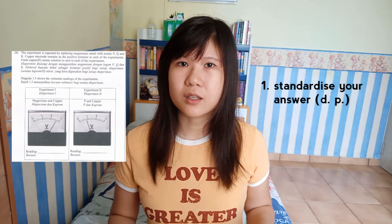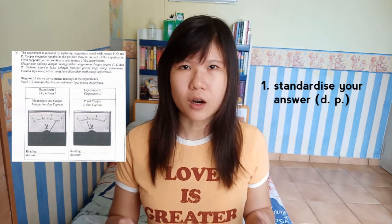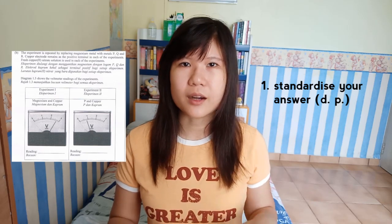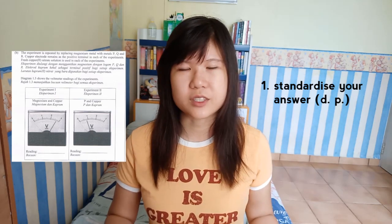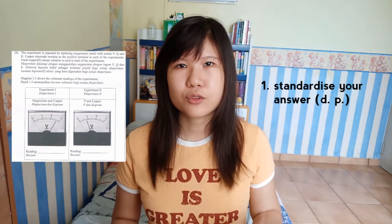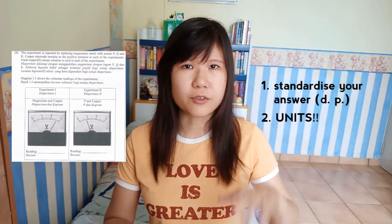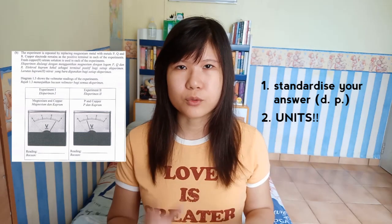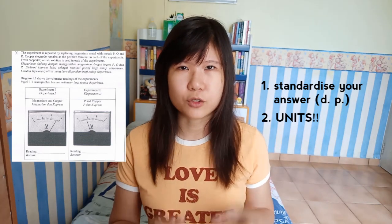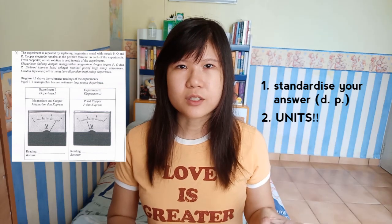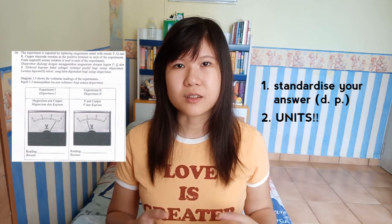Next you're asked to fill in the voltmeter readings — this is like a bonus question. There are two things to remember: first, always standardize your answer — if you put your answer in two decimal places, make sure all answers are in two decimal places. Second, always put in the units, whether in the headings or beside each value. The unit for this would be a capital letter V.